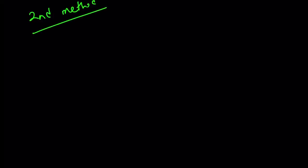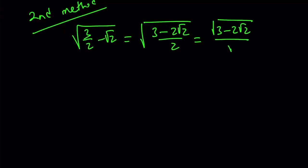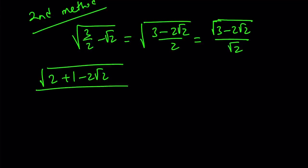For the second method, let me rewrite the original problem. I'm trying to simplify this radical, and I'm going to make a common denominator first. So write it as the square root of (3 minus 2√2) over 2. Then separate the numerator and the denominator: square root of (3 minus 2√2) divided by √2. The numerator is a special expression because 3 minus 2√2 can be written as 2 plus 1 minus 2√2 under the radical.